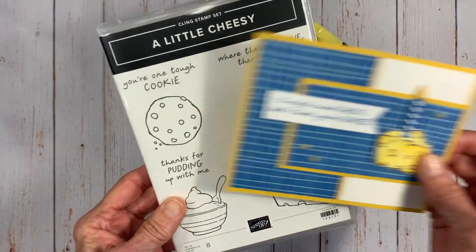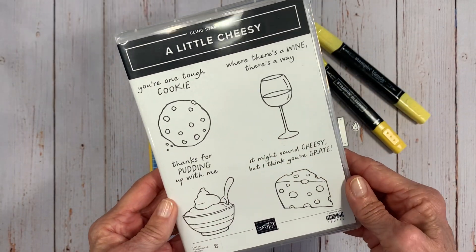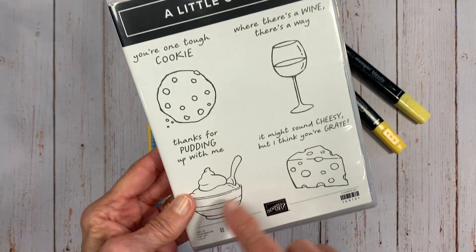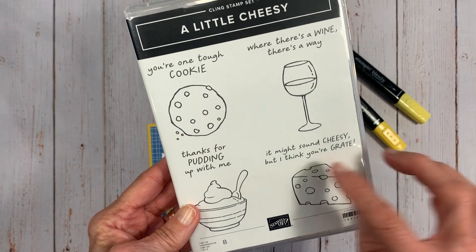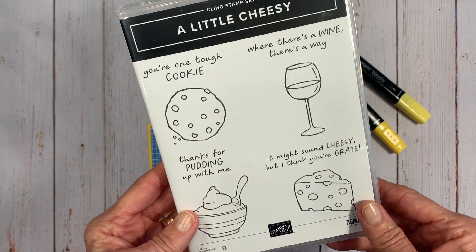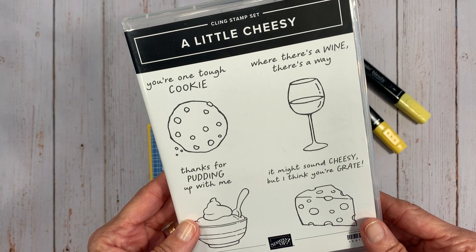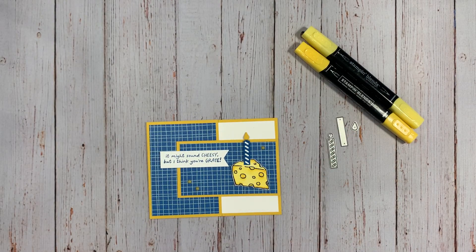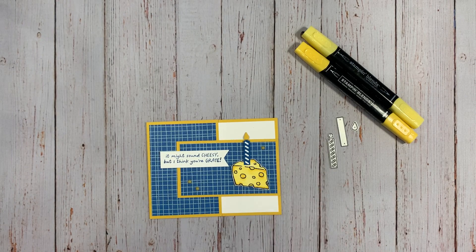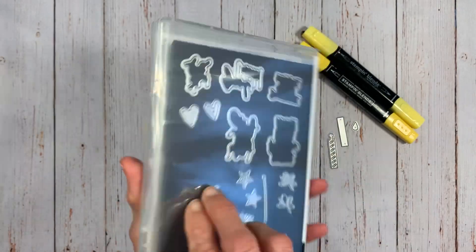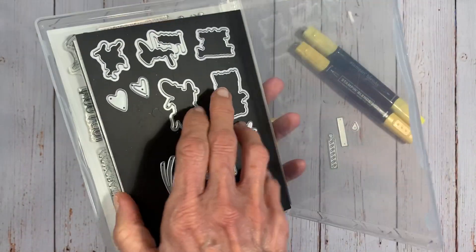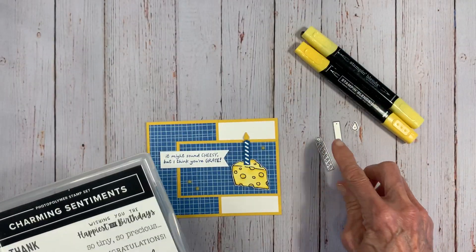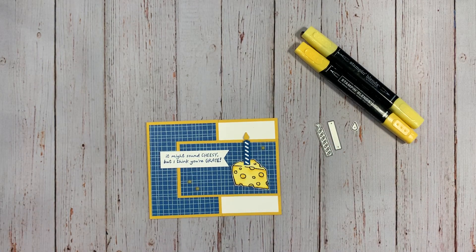So this is the card we're going to make. We're going to use this A Little Cheesy stamp set. It's in the 22-23 annual catalog from Stampin' Up. It's really cute. They've got several different fun punny statements and graphics and it's a clean stamp set. We're going to use some Stampin' Blends and we're also going to use the dies from the Charming Sentiments. That's the Charming Sentiments stamp set and it comes with a set of dies. We're just using this birthday candle die set.